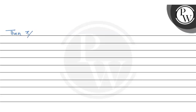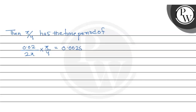π/4 has the time period of: we take 0.02, divide it by 2π, and multiply it by π/4. So this value will be 0.0025 seconds. If we change this into milliseconds, it will be 2.5 milliseconds.